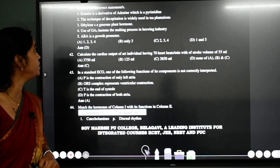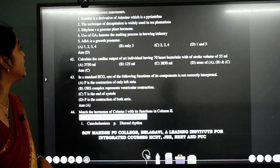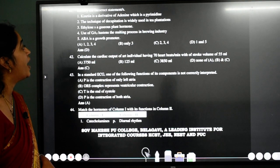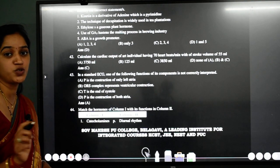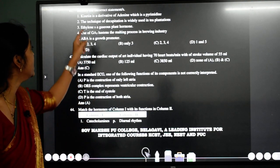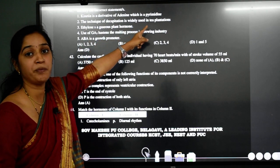So here we are with 41st question, that is, identify the incorrect statement. Kinetin is a derivative of adenine which is pyrimidine. See student, it is a wrong statement. Why? Because adenine is not a pyrimidine, it's a purine.